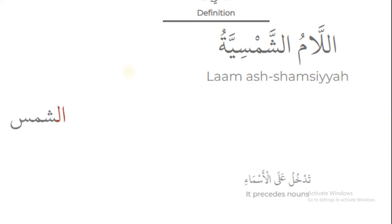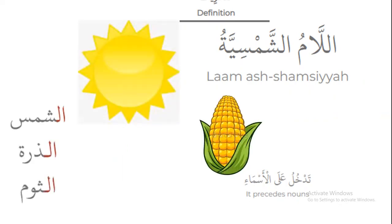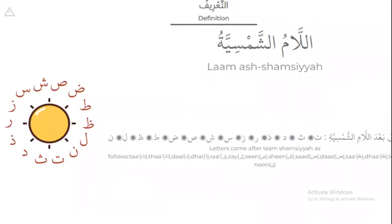Examples of Lam-Shamsiya: 'al-shams,' 'al-zura,' 'al-sawm.' The letters of Lam-Shamsiya are: Daad, Taa, Thaa, Lam, Nun, Taa, Saa, Dal, Zaal, Raa, Zaay, Sin, Shin, Saad.